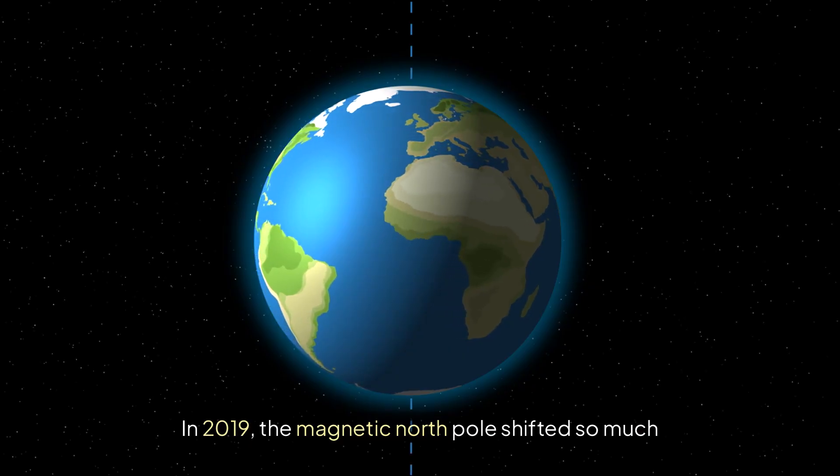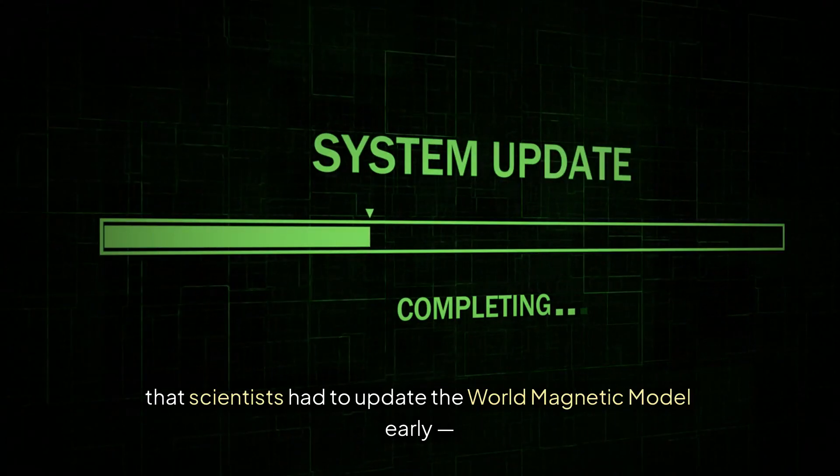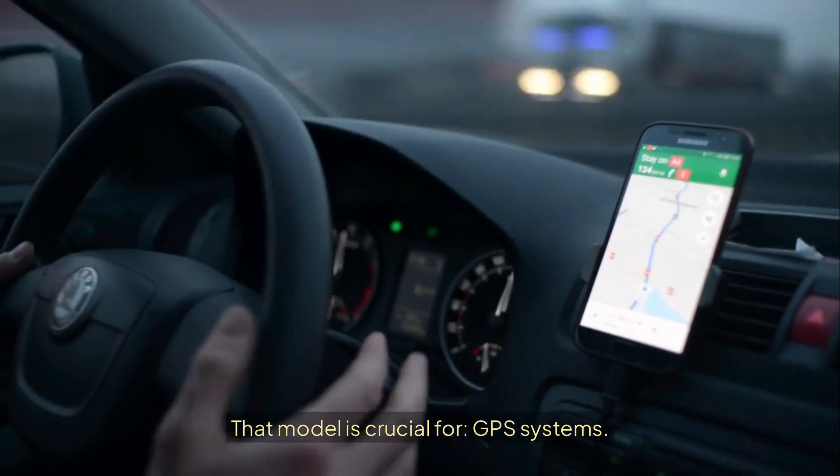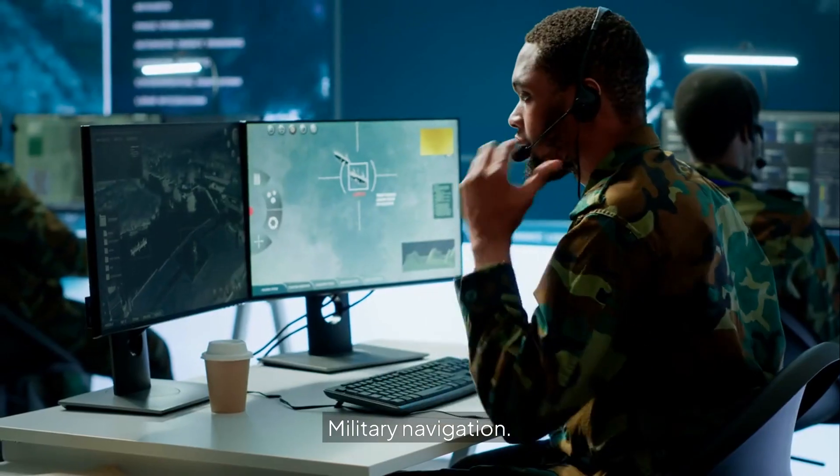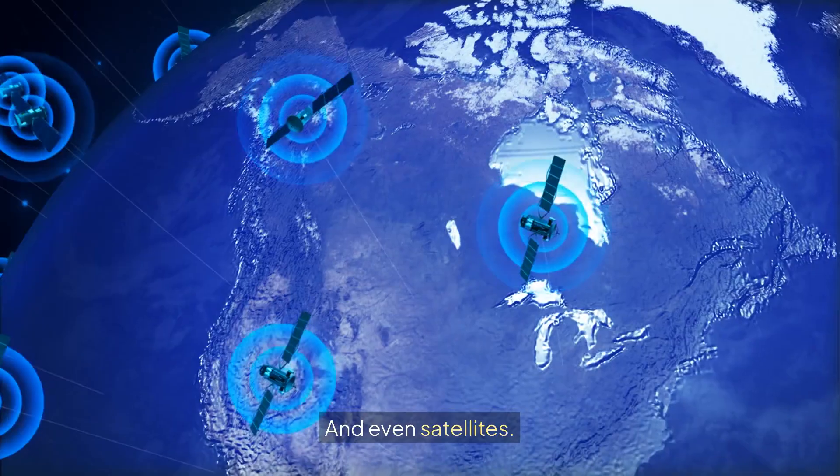In 2019, the magnetic north pole shifted so much that scientists had to update the world magnetic model early, something they normally do every five years. That model is crucial for GPS systems, military navigation, commercial aviation, smartphone compasses, and even satellites.